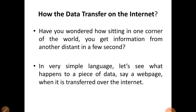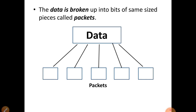Let's see what happens to a piece of data — say a web page — when it needs to be transferred over the internet. The first point is that the data is broken up into bits of small, same-size pieces called packets. So the web page or data is broken off into same-size pieces — for example, five pieces — and these are called packets.